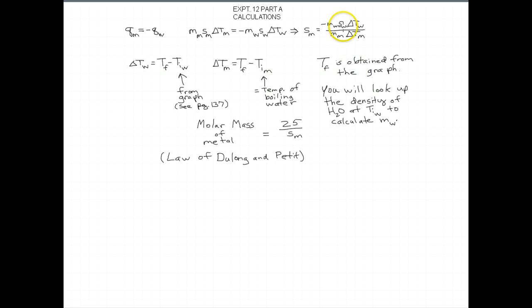And the specific heat of the water, you know that, 4.184 joules per gram degree Celsius. Mass of the metal, whatever you weighed out, about 30 grams, but three places past the decimal.